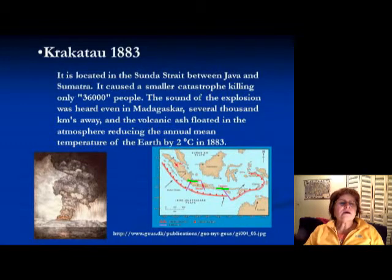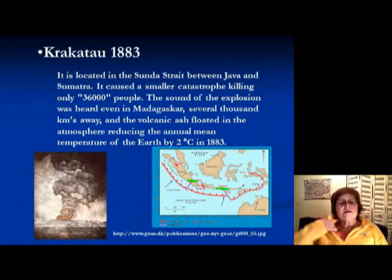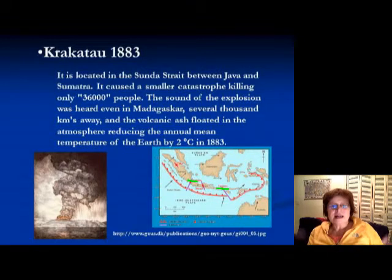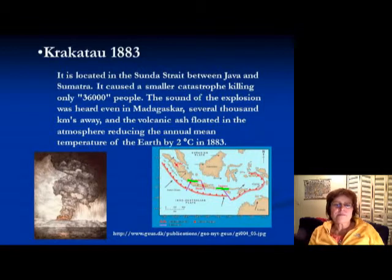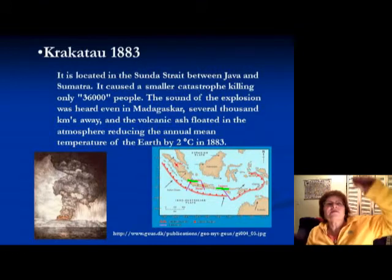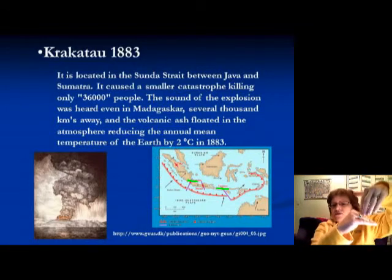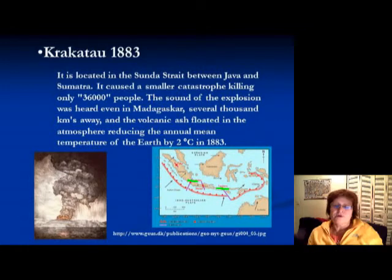Krakatoa erupted in 1883 and killed about 36,000 people. The sound of the explosion was so big that people could hear it even in Madagascar, several thousand kilometers away. There was so much volcanic ash in the atmosphere that it cooled the Earth's mean temperature by two degrees Celsius in 1883. When volcanic ash goes up into the atmosphere, it blocks sunlight and the Earth cools down temporarily until the ash dissipates.